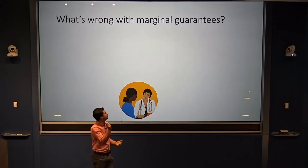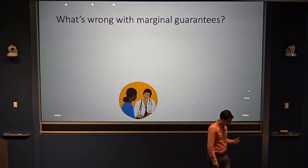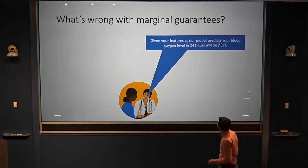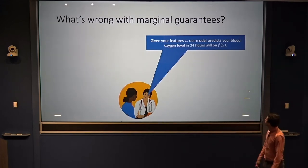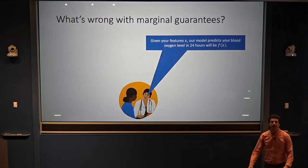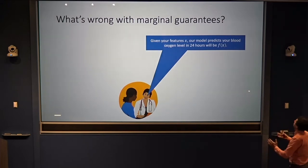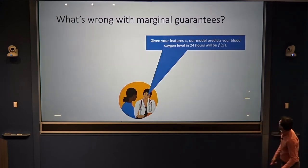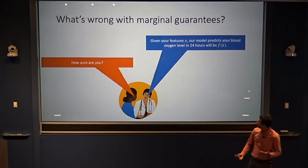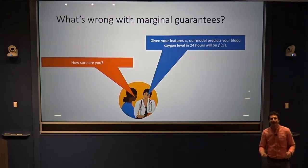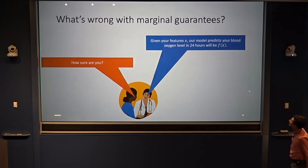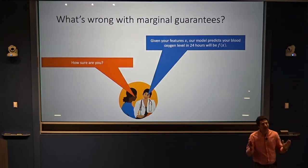To make it more concrete, let's run with the personalized medicine example. Maybe we're in the early stages of a pandemic, trying to marshal scarce medical resources. A patient comes into my hospital and I'm trying to predict their blood oxygen level in 24 hours to figure out what care they need now. Given features x from their medical chart, our model predicts blood oxygen level f(x). If I'm going to decide whether to admit them to the hospital, the patient or doctor might reasonably ask: how sure are you of this? Is this a good prediction for this patient?